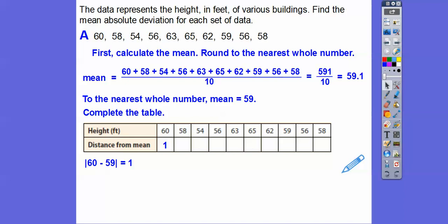58 minus 59 is negative 1, but we want to do the absolute value to keep it positive. So, that's going to be positive 1. 54 minus 59 is negative 5, but the absolute value is positive 5. So, we just keep doing that for all of those. And those are all the distances from the mean.